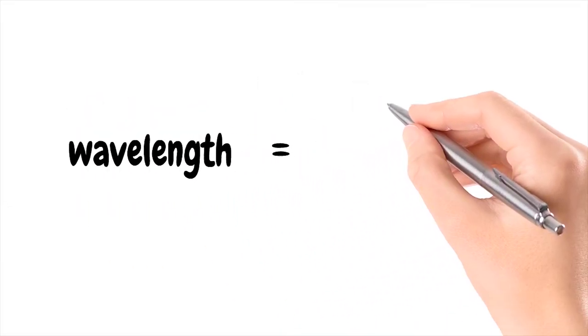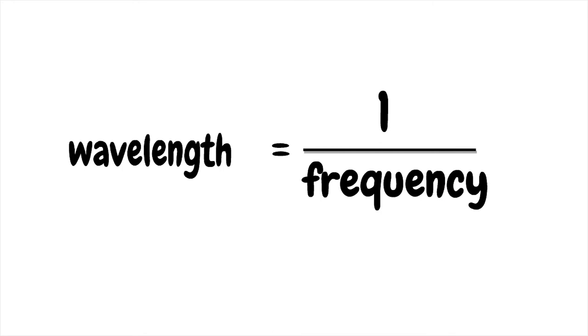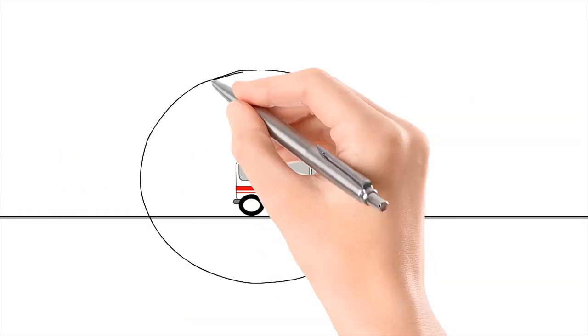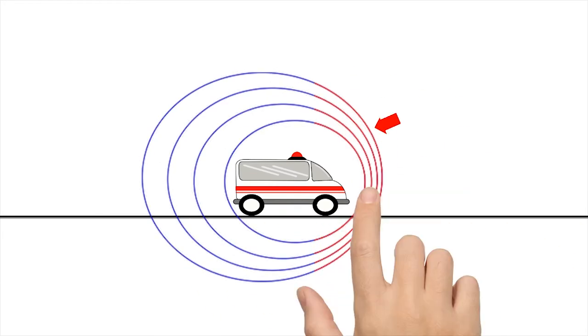This is because the wavelength is inversely proportional to its pitch or the frequency. As the siren blares, it emits sound waves. The more compressed the waves, the shorter the wavelength and the higher the pitch or frequency is observed.